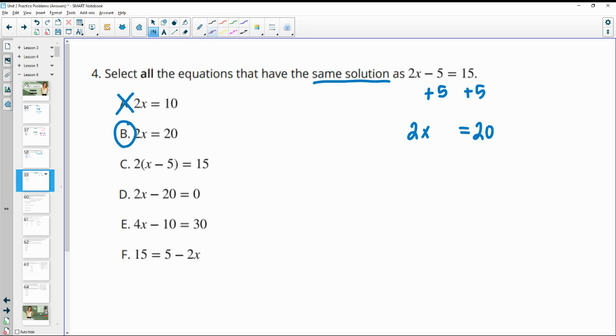For part C, we're taking, they tried to take the 2 out here, right? So they took the 2 outside the parentheses. So if we multiplied this back in, we would need to distribute it to both terms. And then that would be 2x minus 10 equals 15. Well, that's not equivalent because we have this minus 10 as the only thing that's different. So C is not correct.